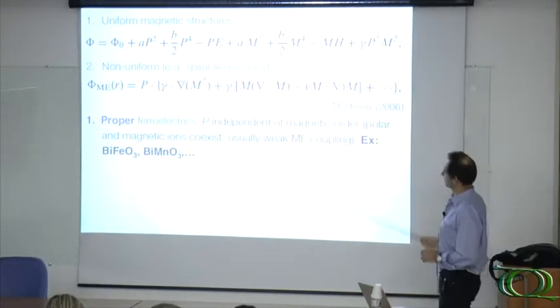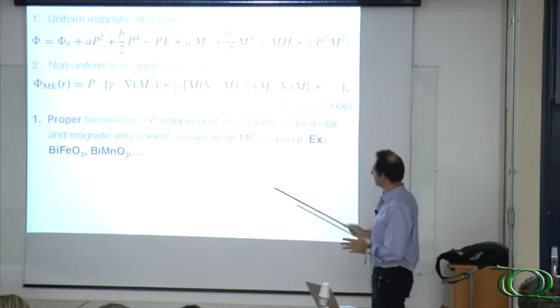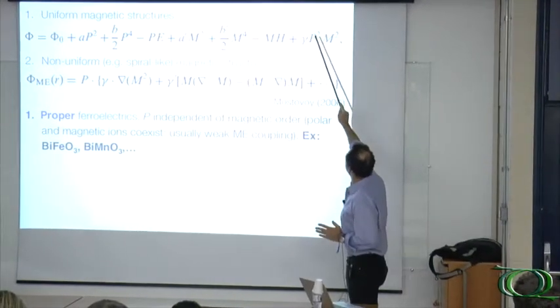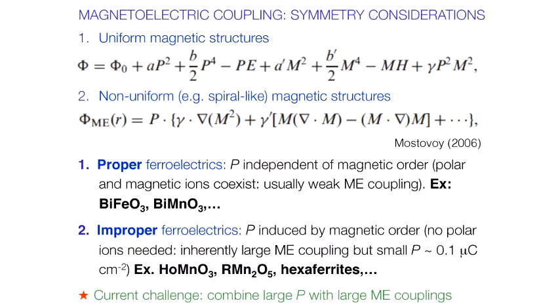This is for symmetry reasons. Now what can happen is that we may have both polarization and magnetization because your material contains both polar and magnetic ions.